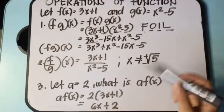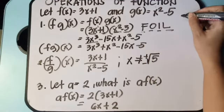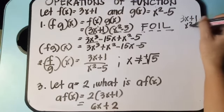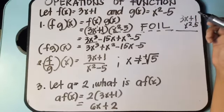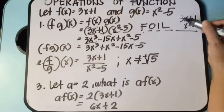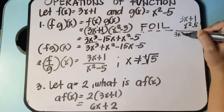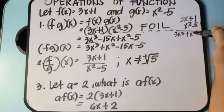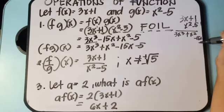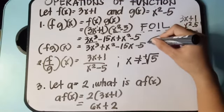If you're not familiar with the FOIL method, you can use the long method. So 3x plus 1 times x squared minus 5: x squared times 3x gives 3x cubed, x squared times 1 gives plus x squared, negative 5 times 3x gives negative 15x, and negative 5 times 1 gives negative 5. The same answer comes out either way.